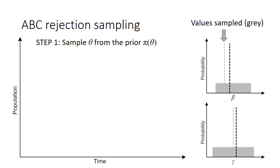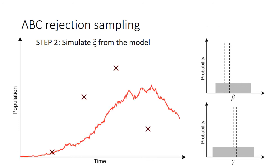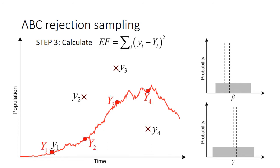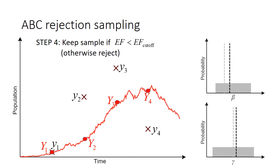Step one involves sampling a parameter set from this prior. So in this case, the sampled values for beta and gamma are denoted by the vertical dashed grey lines. In step two, we simulate a state xi from the model using this parameter set. Next, we calculate the error function, which measures how far this state is from the data. Finally, if the error function is below the threshold EF cutoff, the sample is kept; otherwise it is discarded.